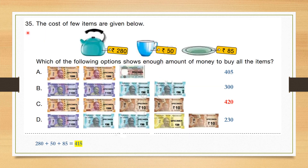Question number 35: The cost of a few items is given. Which option shows enough money to buy all the items? Total cost = 280 + 50 + 85 = 415. Option A has 405 — less than 415, cannot buy. Option B sums to 300 — less than 415, cannot buy. Option C: 200 + 400 + 410 + 420 — this combination reaches 420, enough to buy. Option D sums to 230 — less than 415, cannot buy. Correct answer is option C.